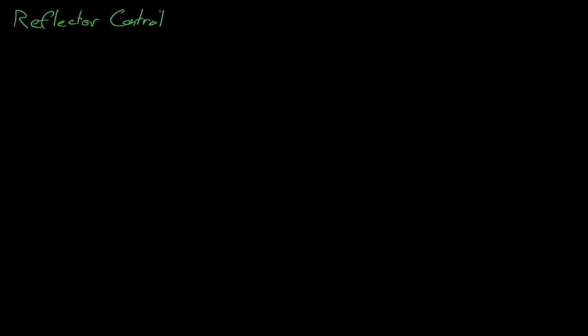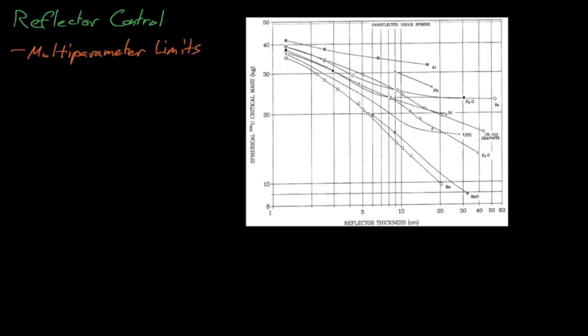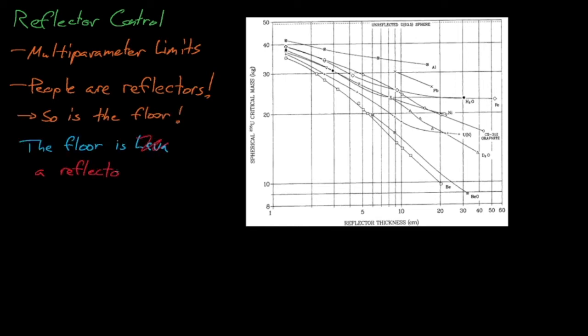Reflector control involves controlling the amount of reflector present around fissile material. Just like mass control, we can use multi-parameter critical mass curves to estimate the subcritical limit for a system that could potentially be surrounded by a certain thickness of a reflector material. When aiming for reflector control, it's important to remember that people are excellent neutron reflectors. An emergency evacuation plan that moves people through an area with fissile material could introduce an unexpected amount of reactivity, as could people standing around the water cooler near fissile material or standing around the material for a tour. The floor is a neutron reflector too, so any event that knocks material off of a shelf and onto the floor could provide an unexpected reactivity insertion.